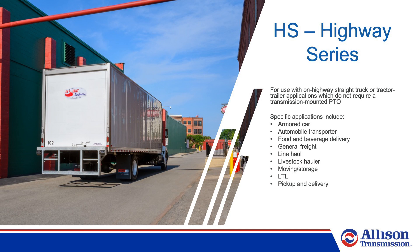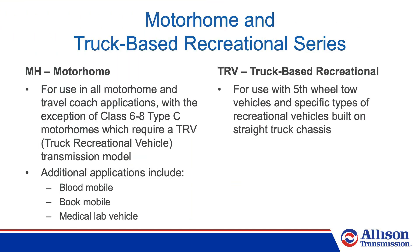Specific applications for the HS include armored car, automobile transporter, food and beverage delivery, general freight, line haul, livestock hauler, moving and storage, LTL, and pickup and delivery. Motorhome transmissions are used in all motorhome and travel coach applications, with the exception of Class 6-8 Type-C motorhomes, which require a TRV model. Additional applications include blood mobile, book mobile, and medical lab vehicle. TRVs, or truck-based recreational vehicles, are used with fifth-wheel tow vehicles and specific types of recreational vehicles built on straight truck chassis.